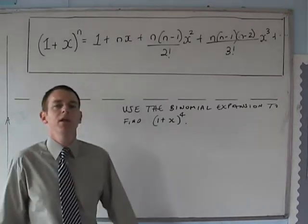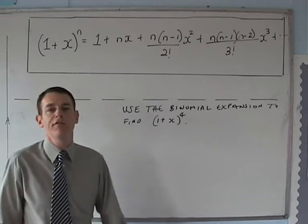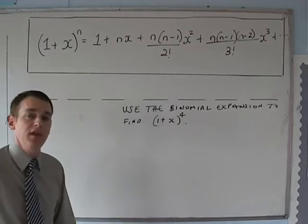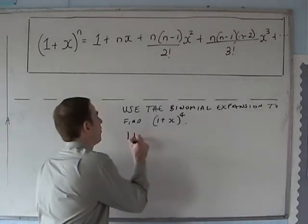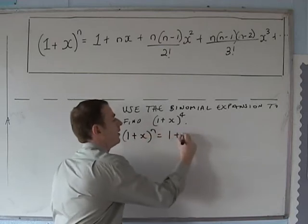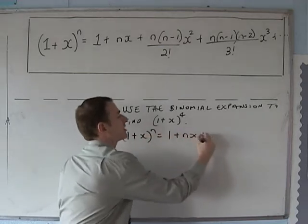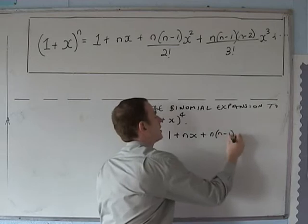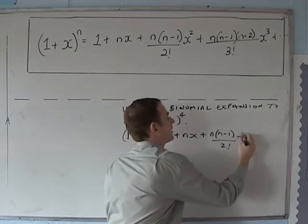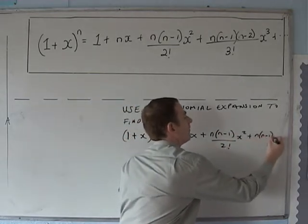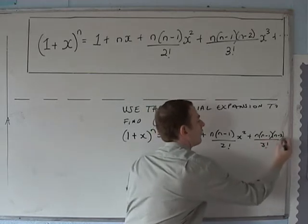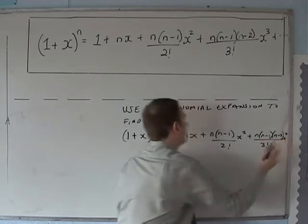Use the binomial expansion to find (1+x)^4. We always start off in the example by writing out the formula: (1+x)^n equals 1 plus nx plus n(n-1)/2! times x squared, plus n(n-1)(n-2)/3! times x cubed.